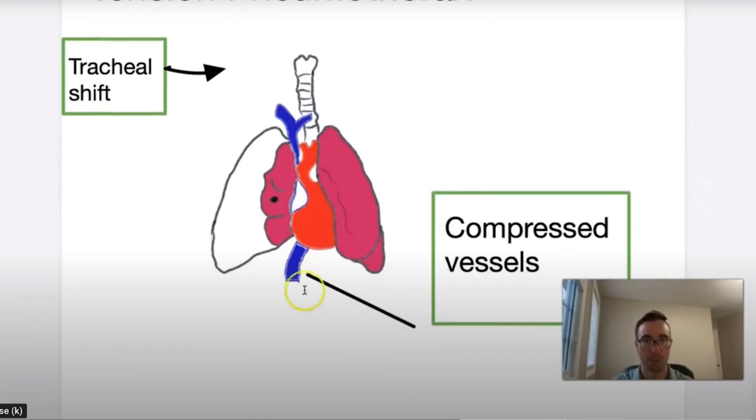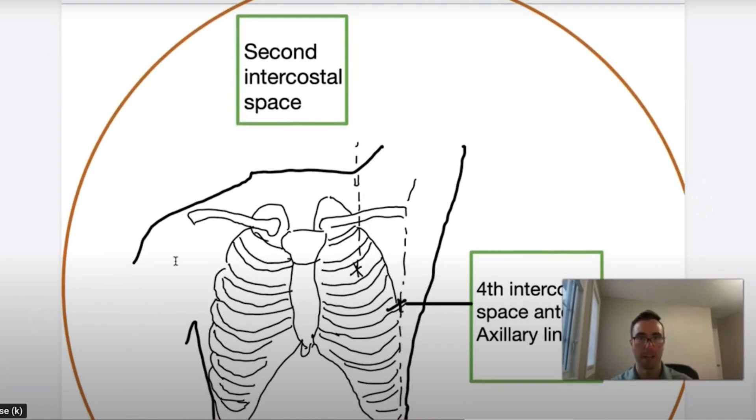So as you can see here, the great vessels are collapsed and compressed, and this leads to a tracheal shift. I should correct this because historically we're taught the second intercostal space mid-clavicular line is the site that we utilize in these patients experiencing a tension pneumothorax.